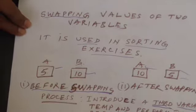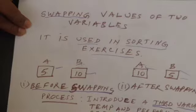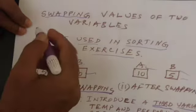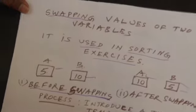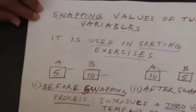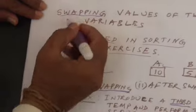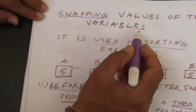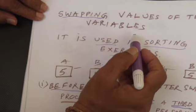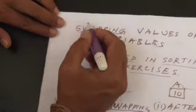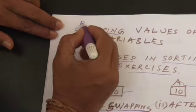Hello, good morning. We are going to discuss today about what is called swapping of two variables. This is very frequently carried out exercise in computer science. Swapping means exchanging.